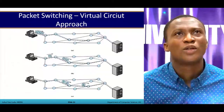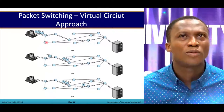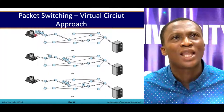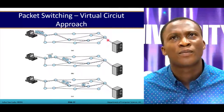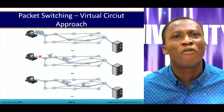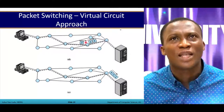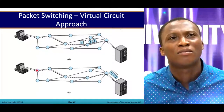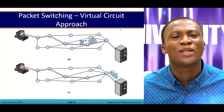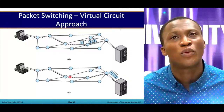Looking at packet switching with the virtual circuit approach using the same diagram: packets are broken down into one, two, three. Because there is a pre-planned route — represented by the short dashes — despite the packets breaking up at a point, they all follow the same path to the destination. They are separated momentarily but move along one single pre-planned route that was already established through the handshake. Once the packet is transmitted, they know they are going through that link.